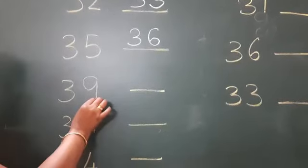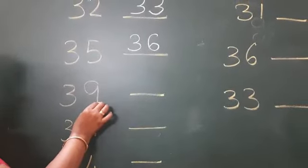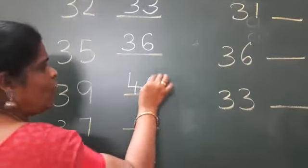3, 9, 39. Which number comes after 39? 4, 0, 40.